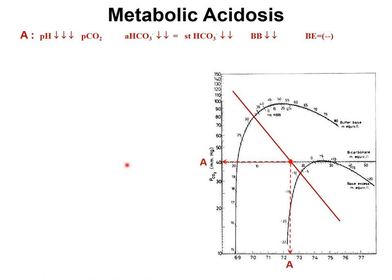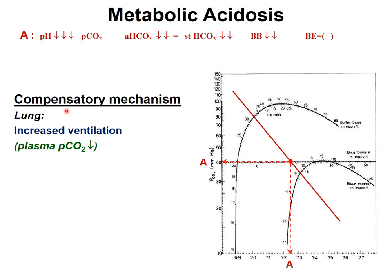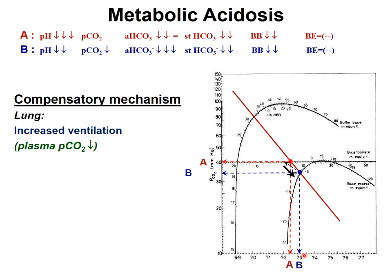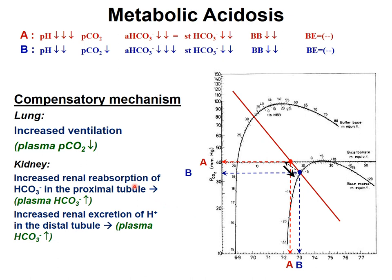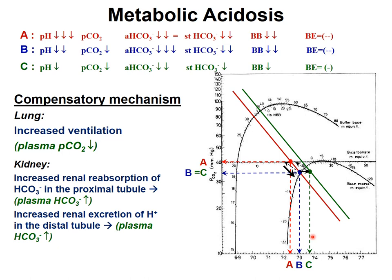On the Siggaard-Andersen nomogram, metabolic acidosis produces a left shift of the standard bicarbonate line and decreased pH. The first compensatory mechanism is the lung, which eliminates CO2, decreasing PCO2 and moving pH closer to normal. Later, if the kidney is not the cause, it compensates by reabsorbing bicarbonate and eliminating protons, shifting the standard bicarbonate line right and moving pH further toward normal.